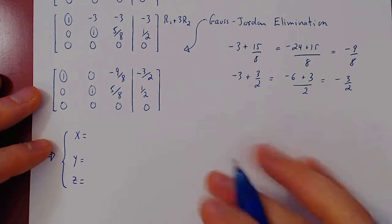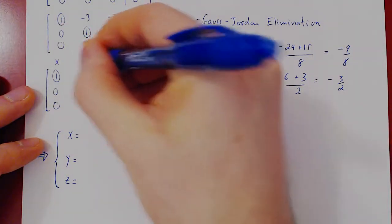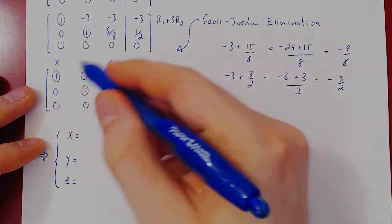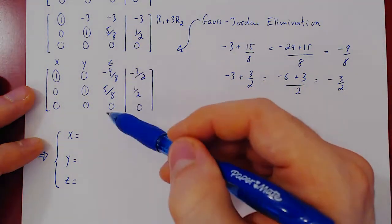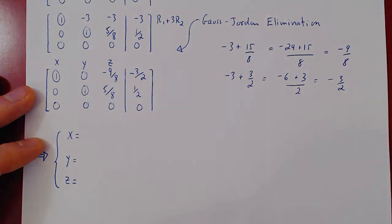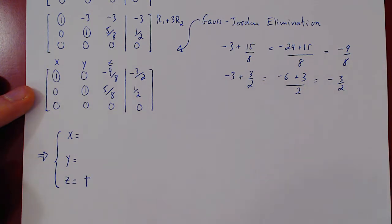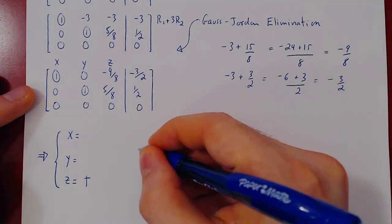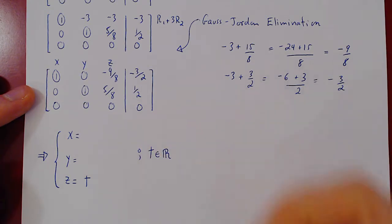Let us remind ourselves that the variables were x, y, and z. x and y are leading variables as they both possess a leading 1, but z is a free variable as it does not have a leading variable, and so z is a parameter. We can say z equals t. And again, we have to explicitly state that t can take on any real value.